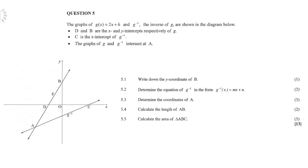If you look at question 5, the graphs of G of X, which is 2X plus 6, and G inverse are shown in the diagram below. D and B are the X and Y intercepts respectively of G. C is the X intercept of the inverse. The graph of G and its inverse intersect at A.